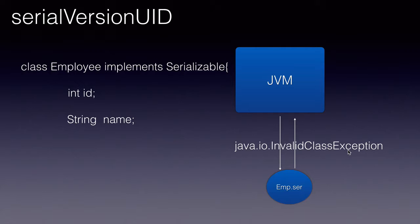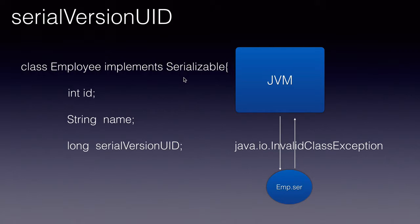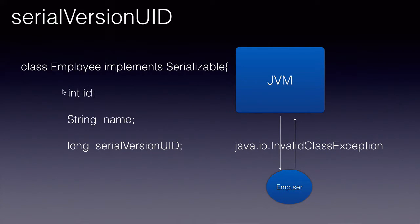This is because the JVM assigns a field called serial version UID to every class that implements Serializable. This is to ensure that whatever class's object is being serialized, it is the same exact class that is in memory when it is being deserialized. This calculation of the serial version UID is up to the JVM. It typically uses the fields on that class and their values to calculate it, but that algorithm might vary from JVM to JVM.